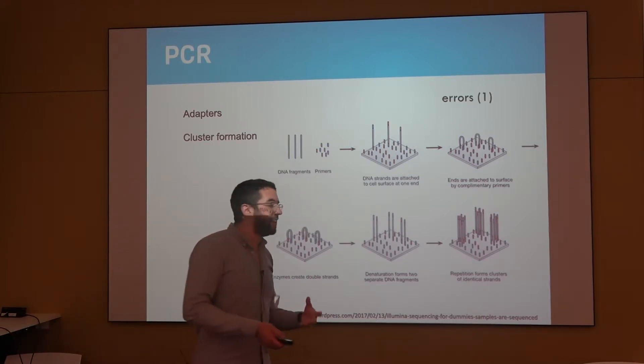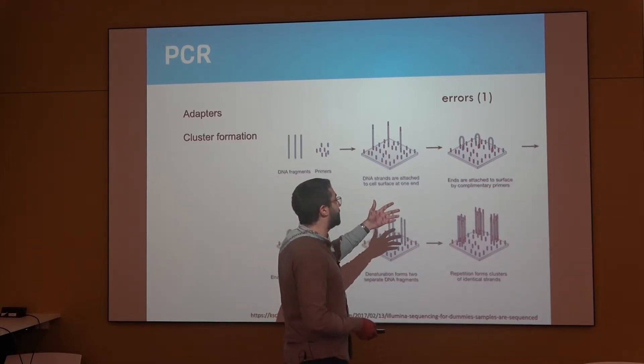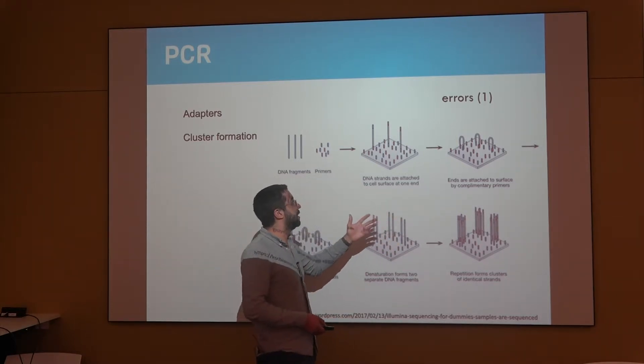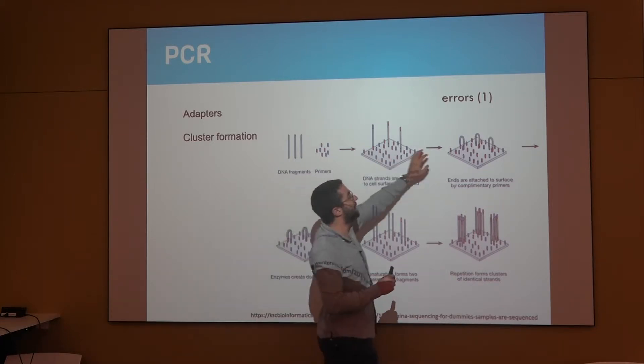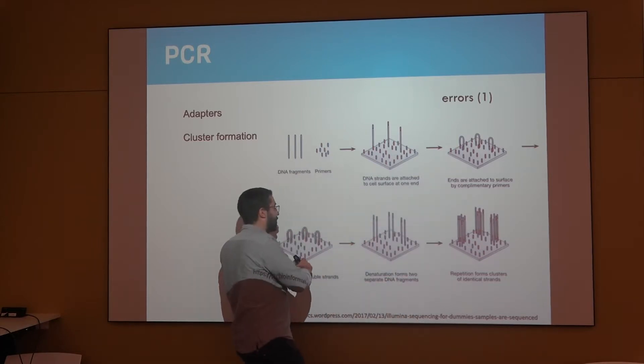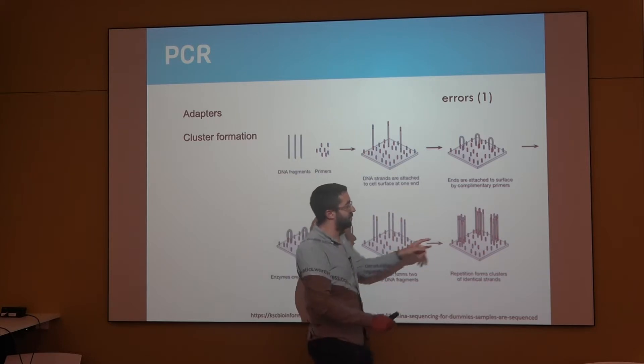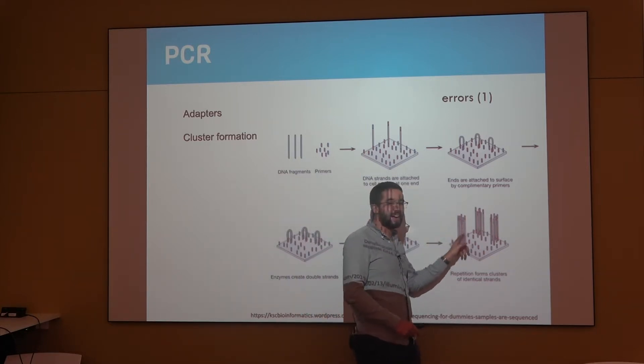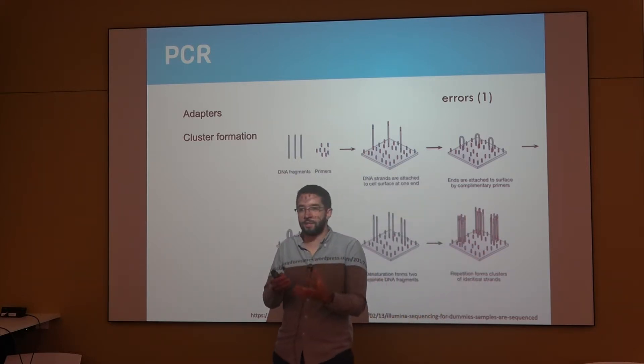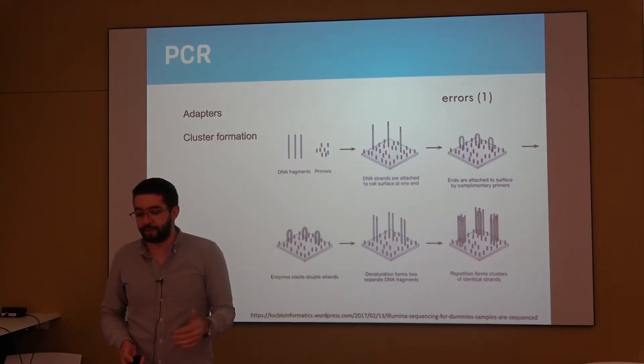And as you may imagine, if the first type of error that we talked about earlier, that is placing a different nucleotide than the one they should have placed, happens early in this process, then you're going to have different versions of the strand at the end of this process, and that will also reduce the quality of the reads.